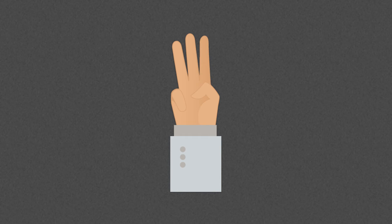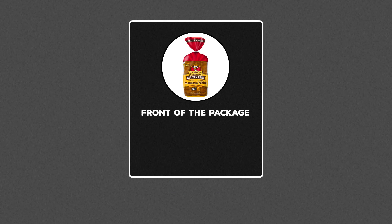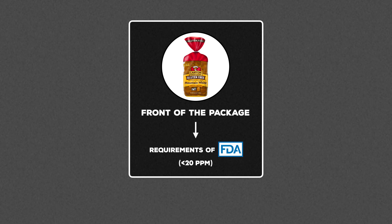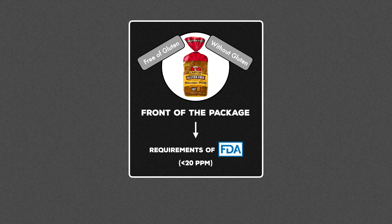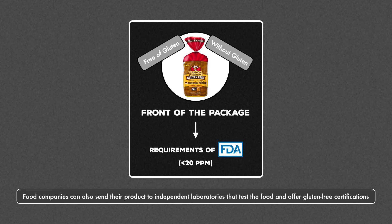There are three places a person with celiac disease should look for information when choosing foods. First, if the front of the package says gluten-free, then it should be safe to consume. In order for a food to have this label, they must meet the requirements set forth by the FDA, which is less than 20 parts per million of gluten. This is a voluntary labeling option, so not every gluten-free food will have it, but many products made from flour do. Other phrases that are permissible are 'free of gluten' and 'without gluten.' Food companies can also send their product to independent laboratories that test the food and offer gluten-free certifications, however the FDA doesn't endorse, accredit, or recommend any particular third party.